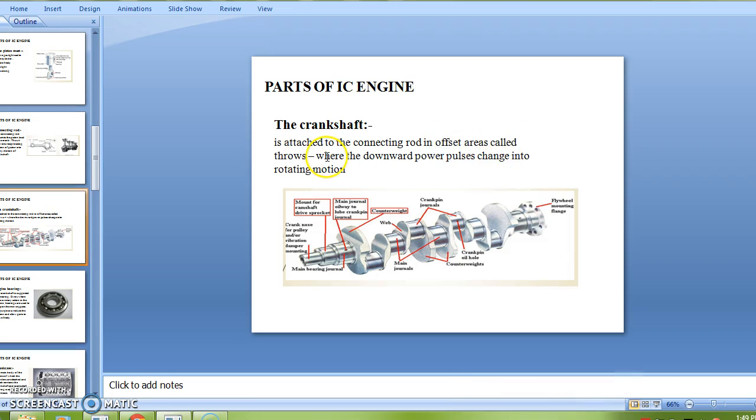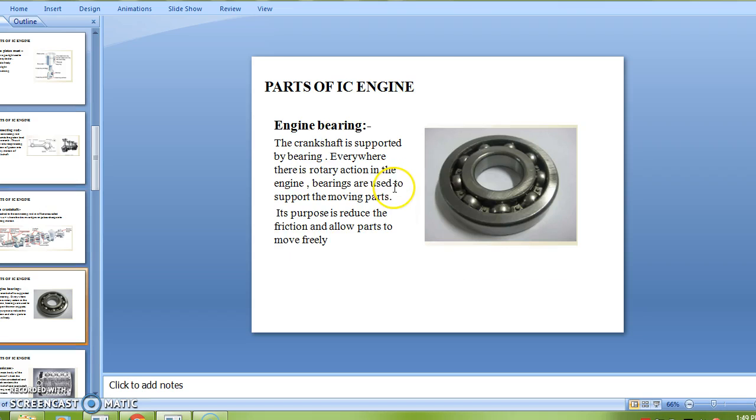Next part is bearing. The crankshaft is supported by bearing. Everywhere there is rotary action in the engine, bearings are used to support the moving parts. Its purpose is to reduce the friction and allow parts to move freely.